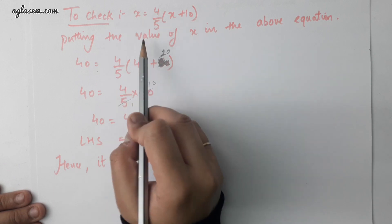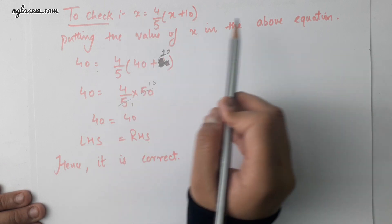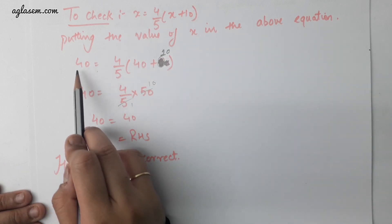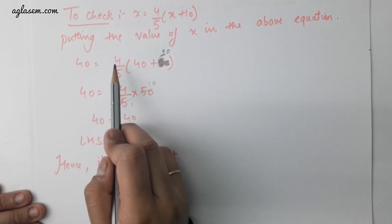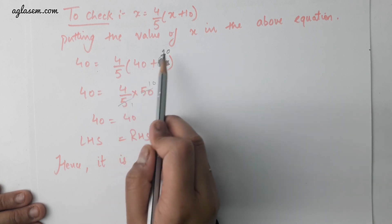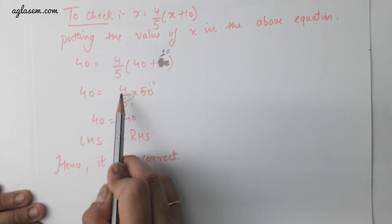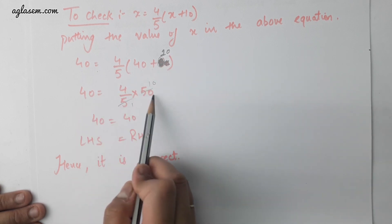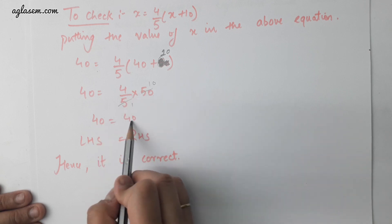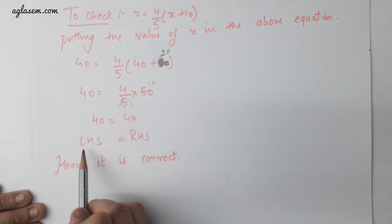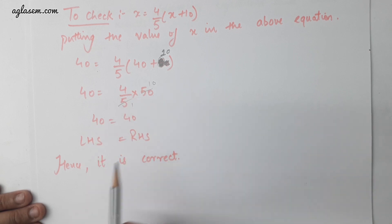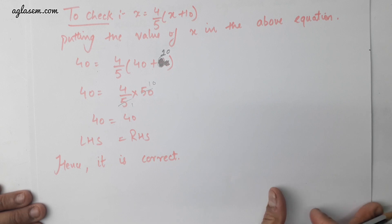To check, we will put the value of x in the given equation. We get 40 equals to 4 by 5 multiplied by 50, giving 40 is equal to 40. Therefore, LHS is equal to RHS. Hence it is correct.